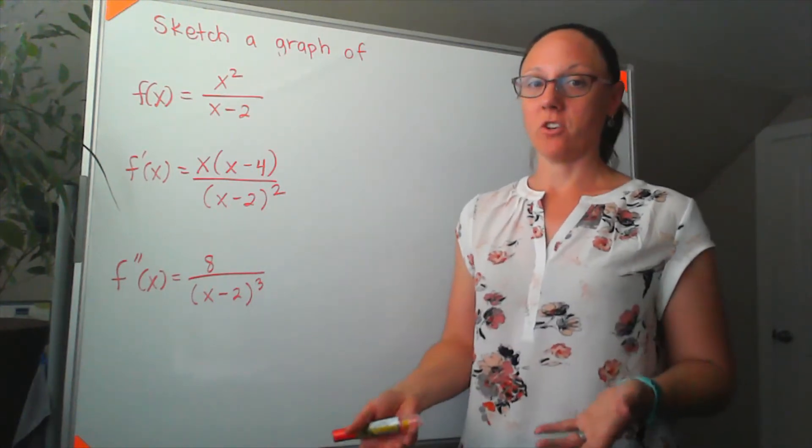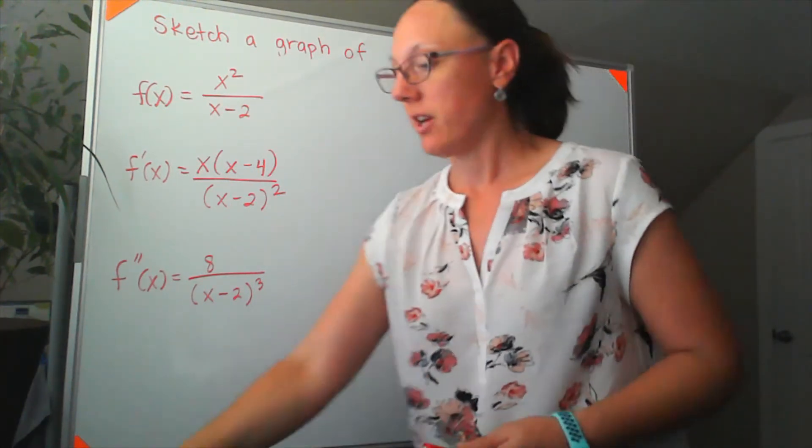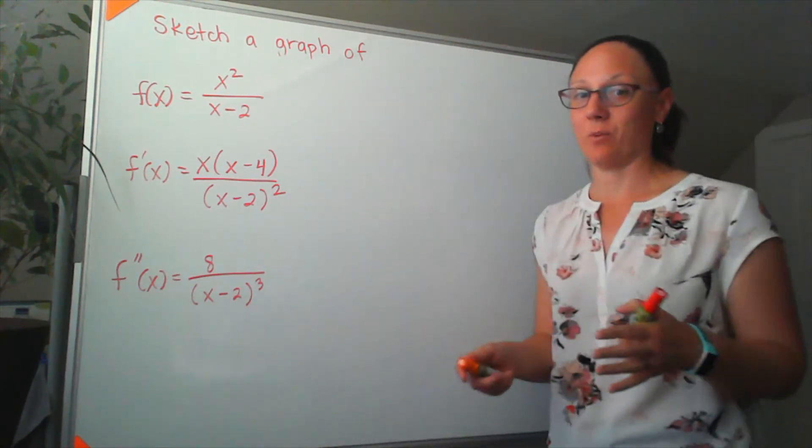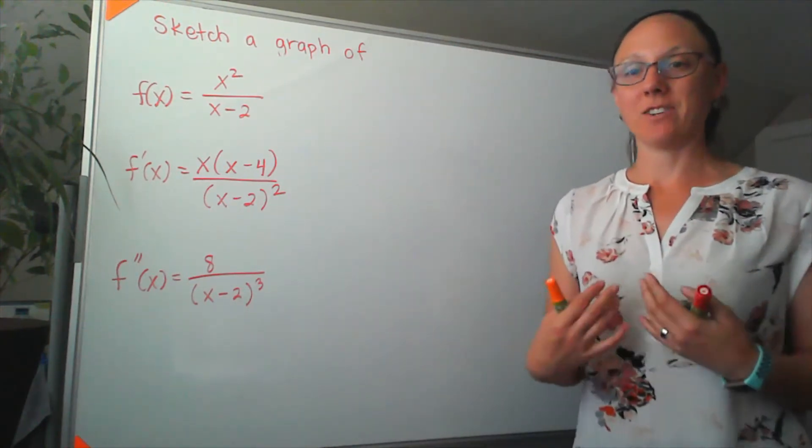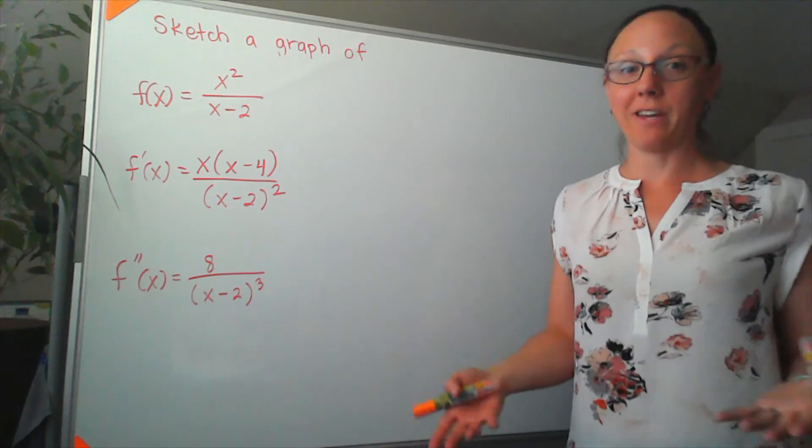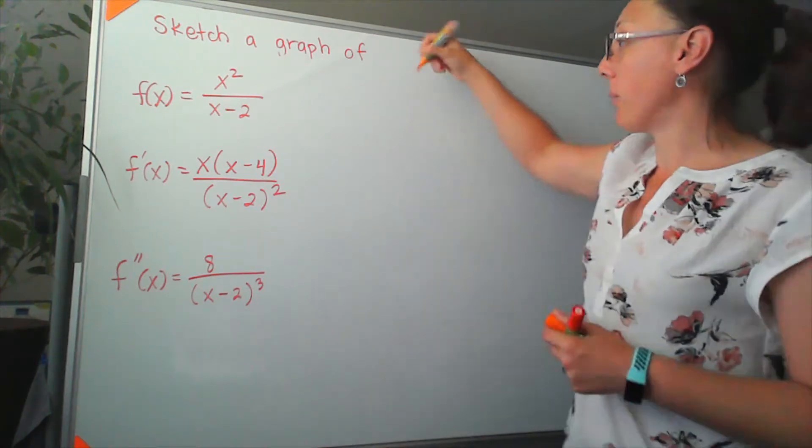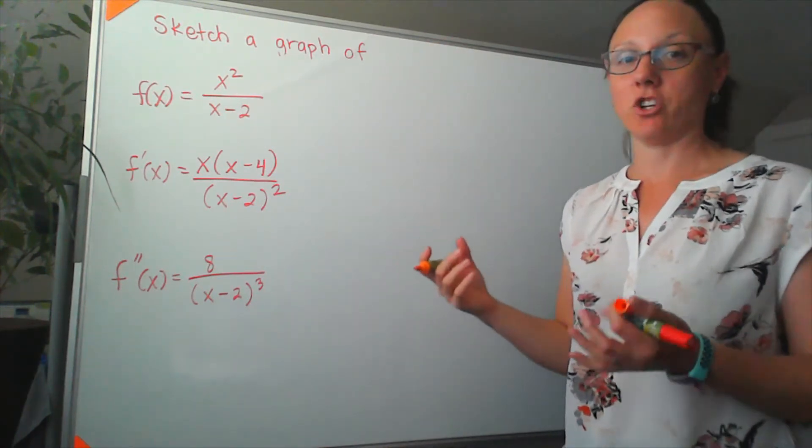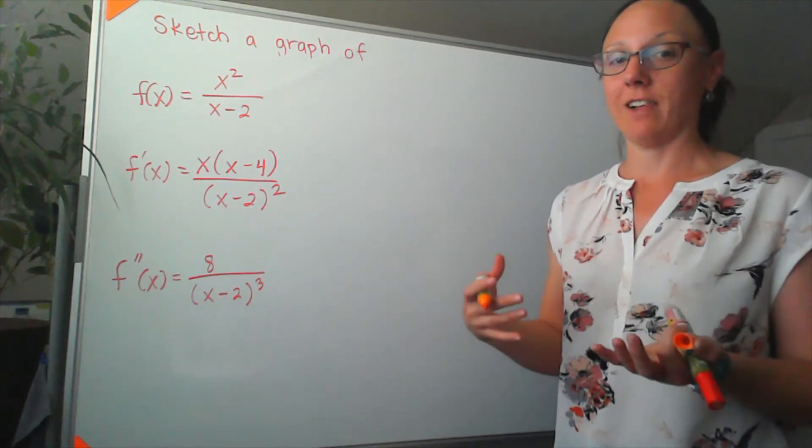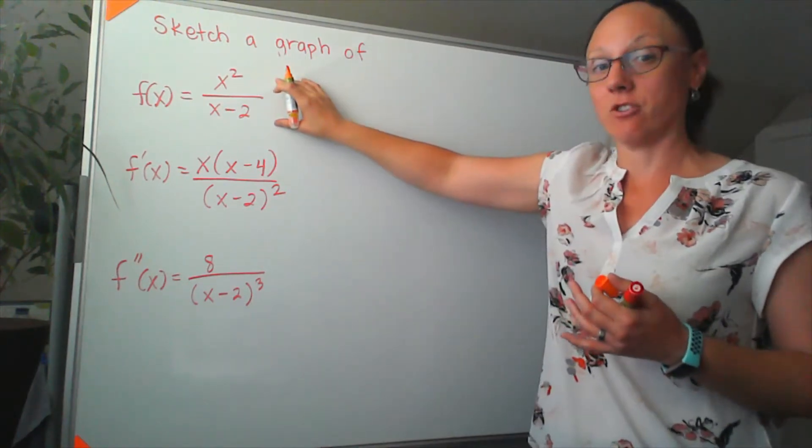When we're asked in calculus to do a detailed sketch, there's usually a long list of things that we need to make sure to take care of, and I like to start with the ones that are really pre-calculus skills. So I'm going to start by looking for x and y-intercepts, and to check for both vertical and horizontal asymptotes, because we do have a rational function.